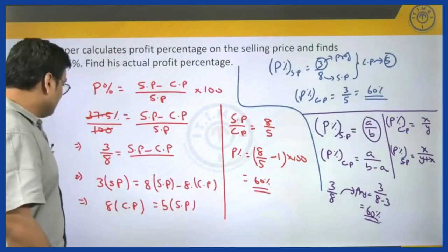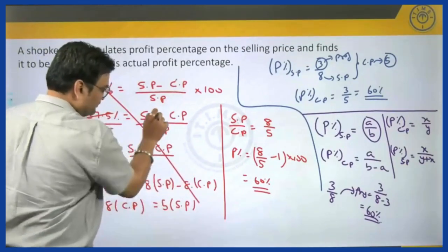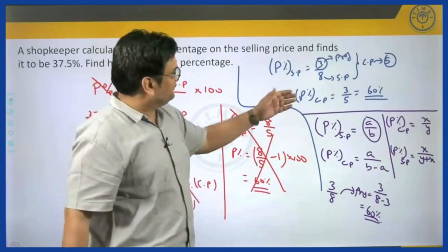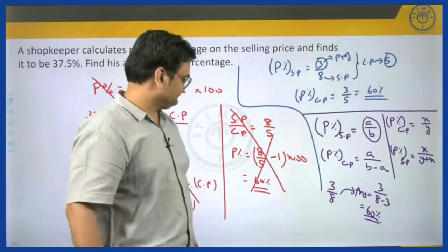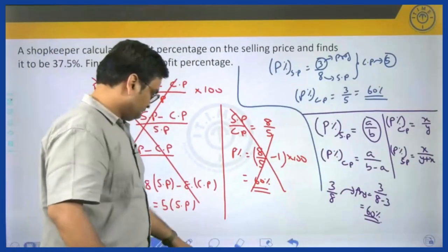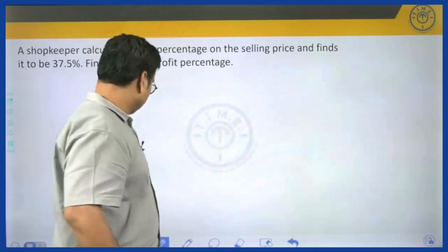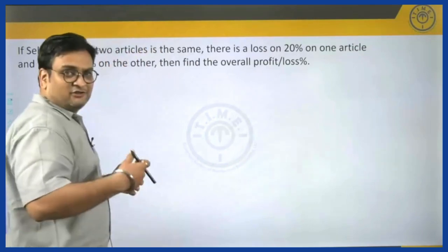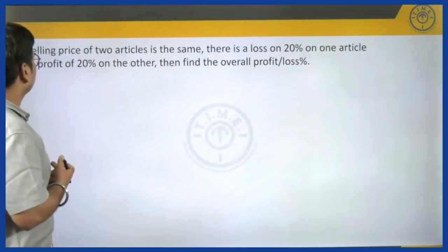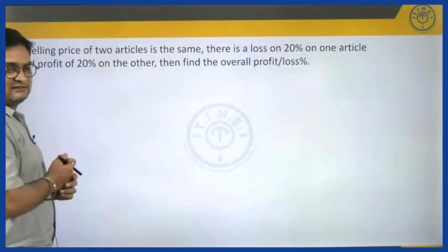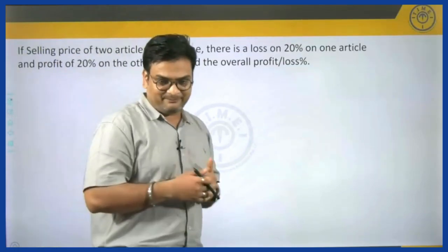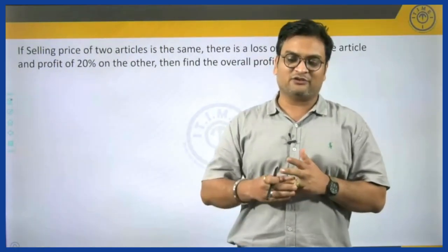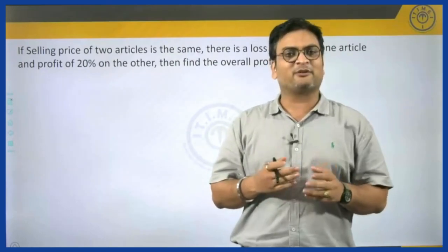So we can use this formula for answering this type of question. You should never go for the first detailed approach — it is very long and unnecessary. You can either go for the fraction shortcut or remember the formula. Moving on to the next question: if the selling price of two articles is the same, there is a loss of 20 percent on one article and a profit of 20 percent on the other, then find the overall profit or loss.